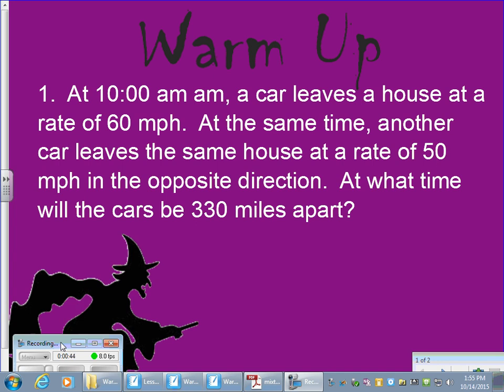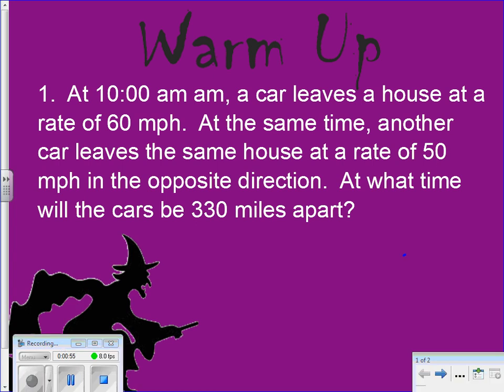At 10 a.m., a car leaves a house at a rate of 60 miles per hour. At the same time, another car leaves the same house at a rate of 50 miles per hour, but it's going in the opposite direction. So picture this: you got one car going one way, another car going the other way. One of them is going 60 miles per hour and one is going 50 miles per hour.